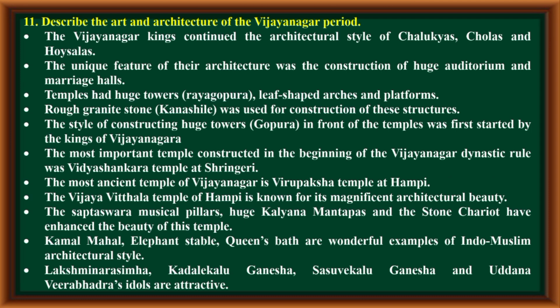Describe the art and architecture of the Vijayanagara period. Vijayanagara kings continued the architectural style of the Chalukyas, Cholas, and Hoysalas. The unique feature of their architecture was the construction of huge auditoriums and marriage halls. Temples had huge towers (rayagupura), leaf-shaped arches, and platforms. Rough granite stone was used for construction. The style of constructing huge towers in front of temples was first started by the Vijayanagara kings. The most important temple constructed in the beginning of the dynasty was the Vidyashankara temple at Sringeri. The most ancient temple of Vijayanagara is the Virupaksha temple at Hampi.